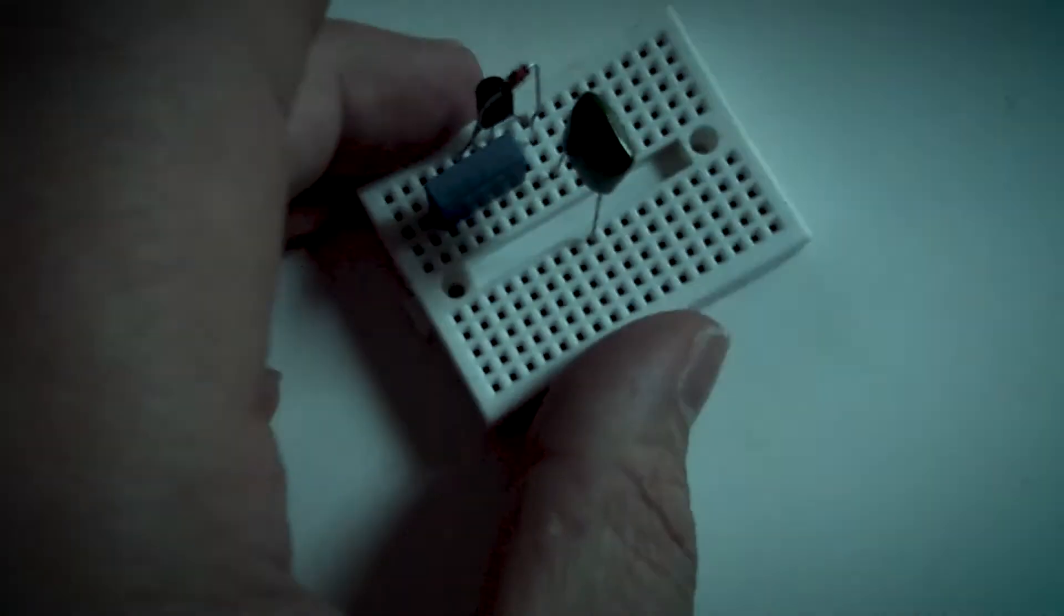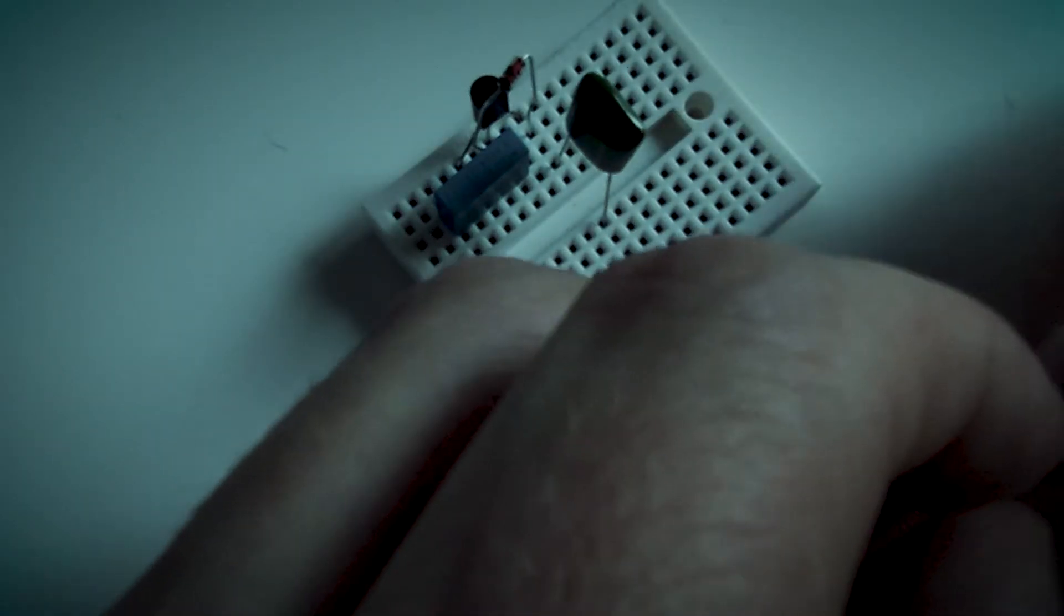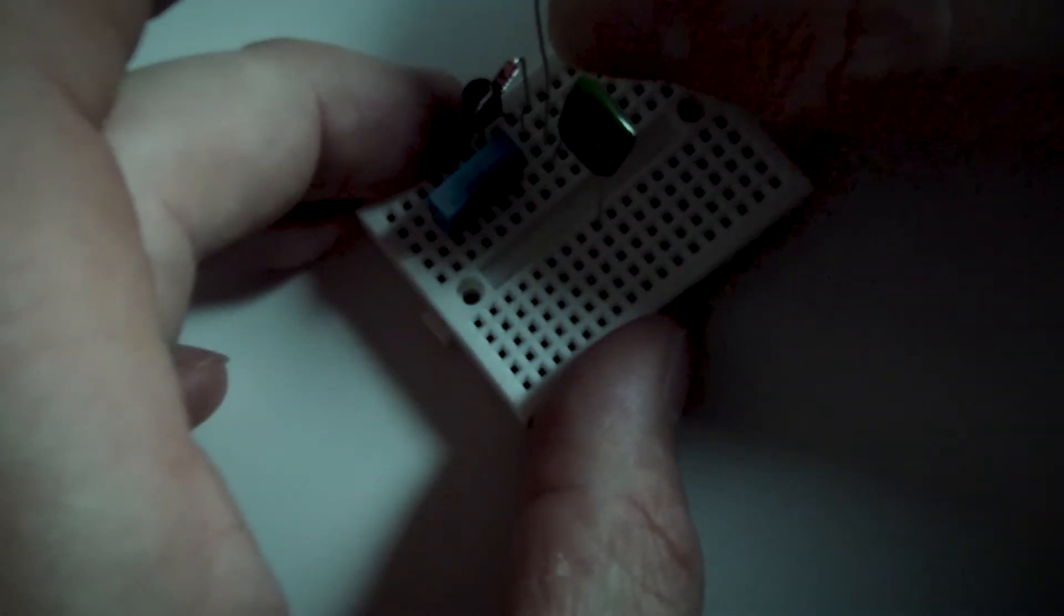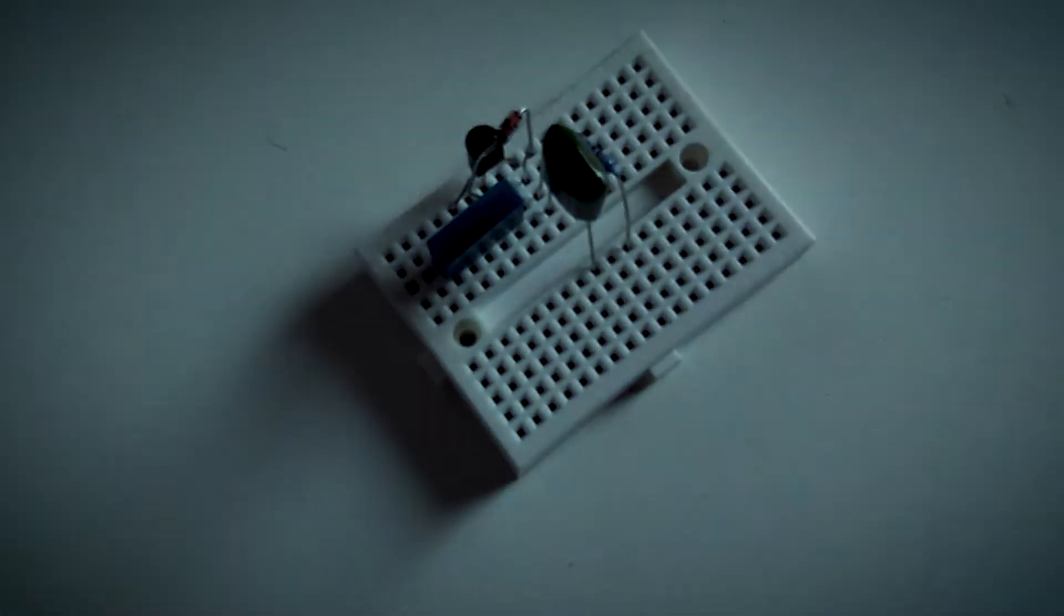And then the 10k resistor is also going to go from the third leg, and that's going to go to the 9 volt. Okay, so those are all the components in. So as I said, the 10k...